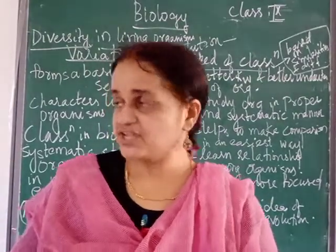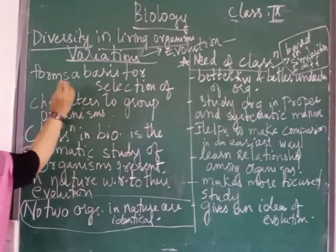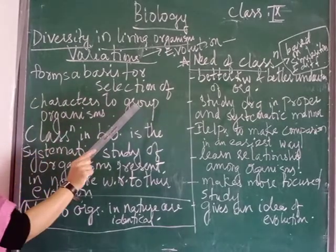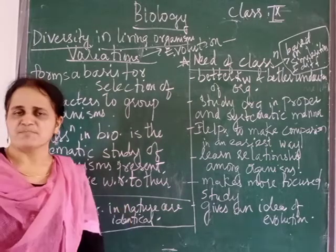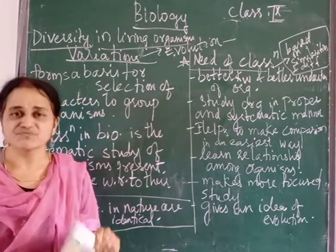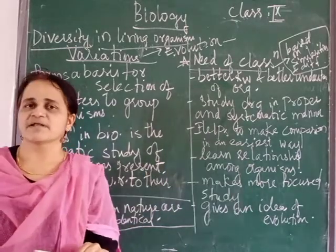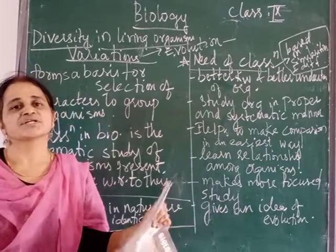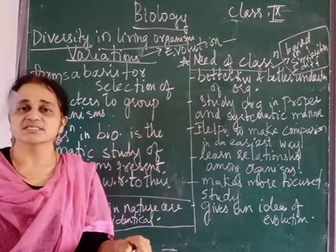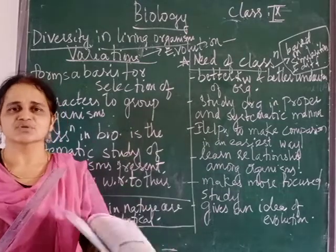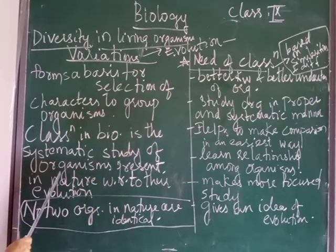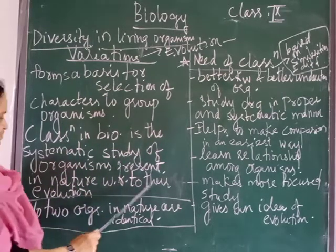Same way, we have to see classifications in biology. What is the base for this classification? Variation forms a basis for the selection of characters to group organisms. Our main aim is to group different organisms. Because if we do not group them, there may be a lot of confusion and chaos — nobody knows which plant belongs to which group. There are some botanists — botany means study of plants, zoology means study of animals — and these scientists came together and did this classification. Classification in biology is a systematic study of organisms present in nature with respect to their evolution.